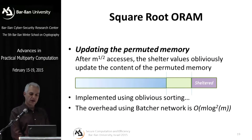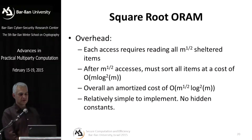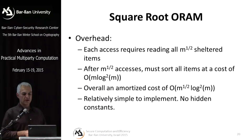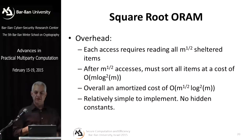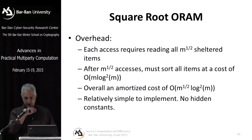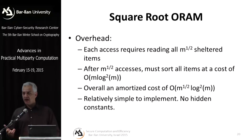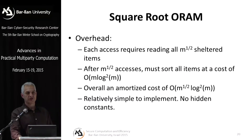The overhead of sorting using the Batcher network is O(m log² m). Each time we access an item, we read the entire shelter — O(√m) items. After √m operations, we sort everything again at cost O(m log² m). The amortized cost per access is O(√m · log² m), which is much smaller than m. The nice thing about this system is that it's very easy to implement with almost no hidden constants once you have the oblivious sorting algorithm. There were implementations of this scheme about 10 years ago that are pretty efficient — more efficient than implementations of the hierarchical scheme I'll show next, which has polylog overhead.